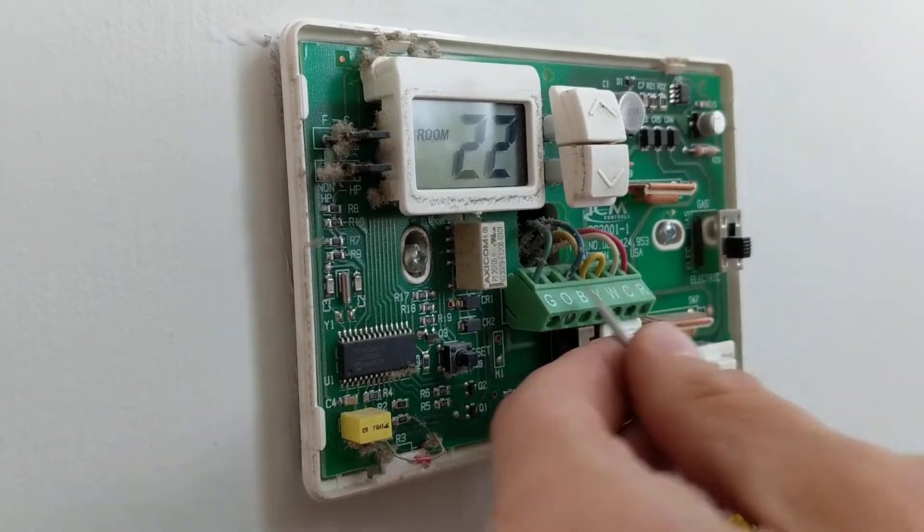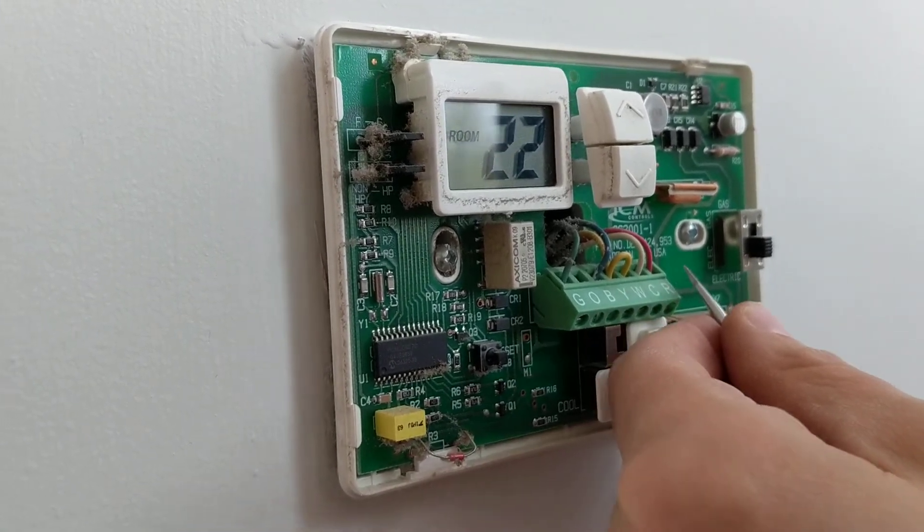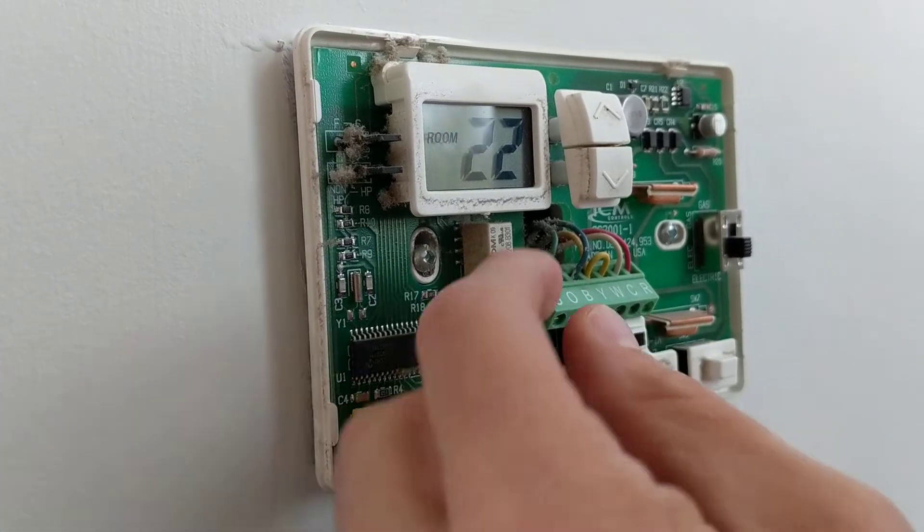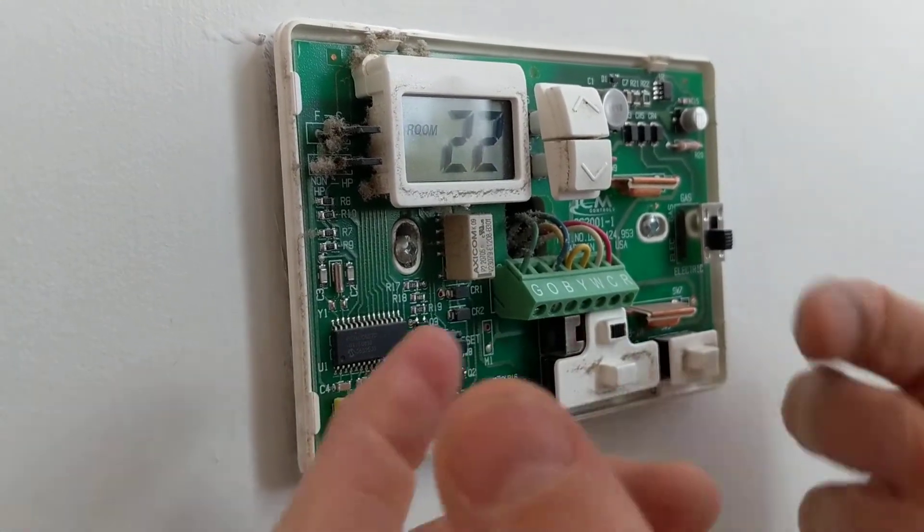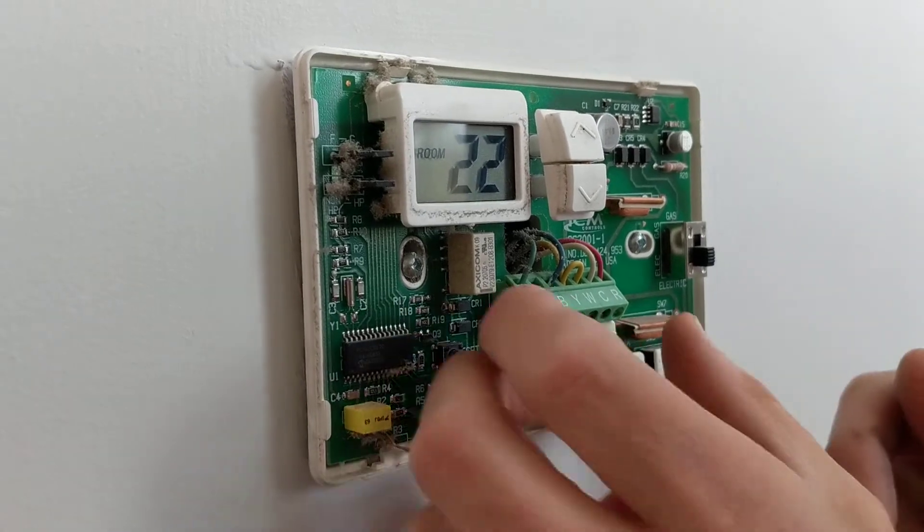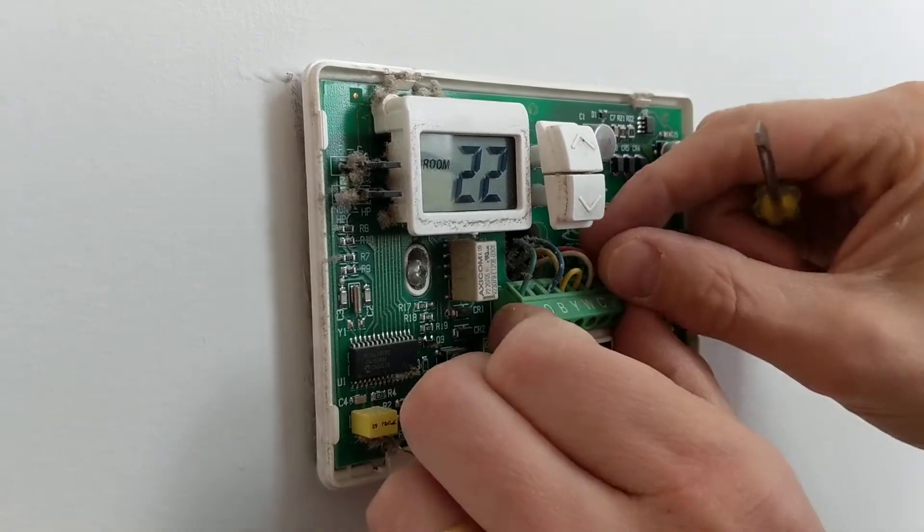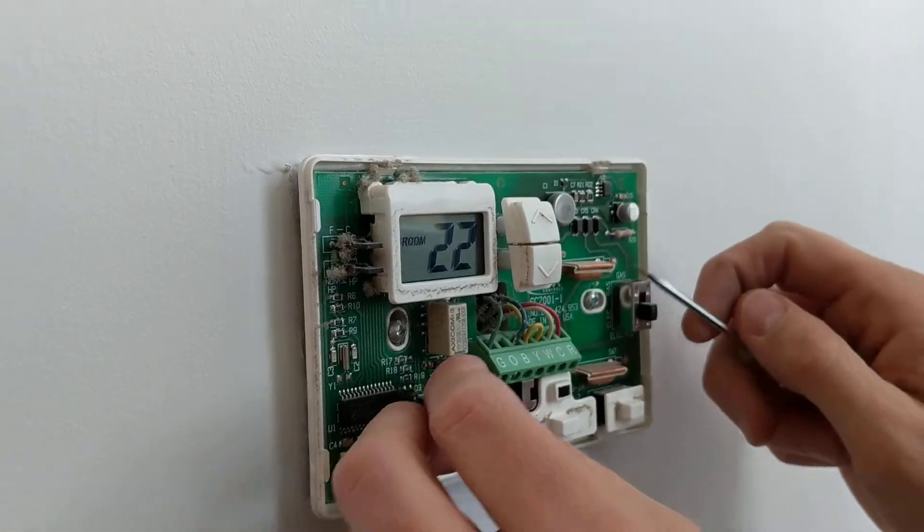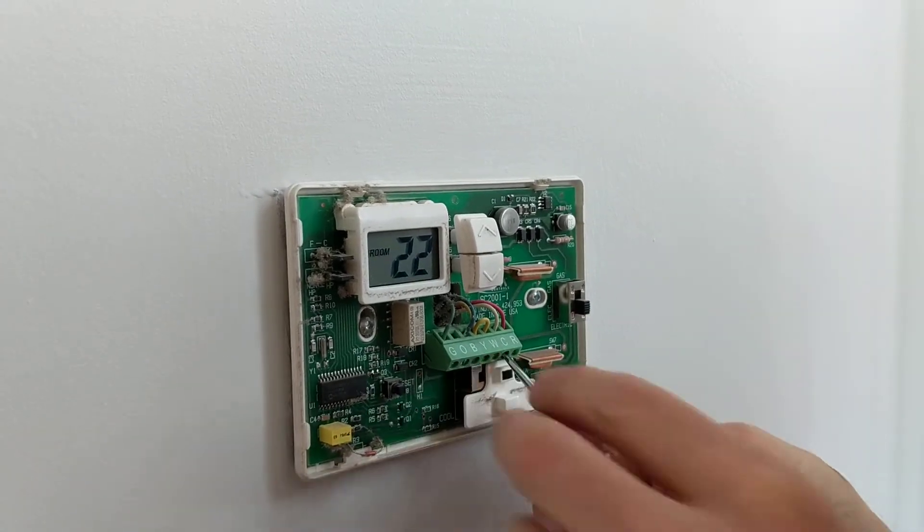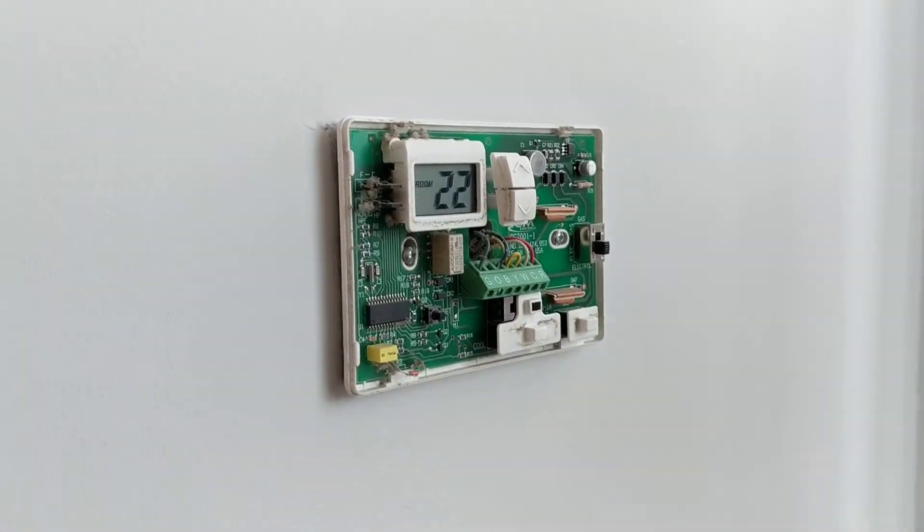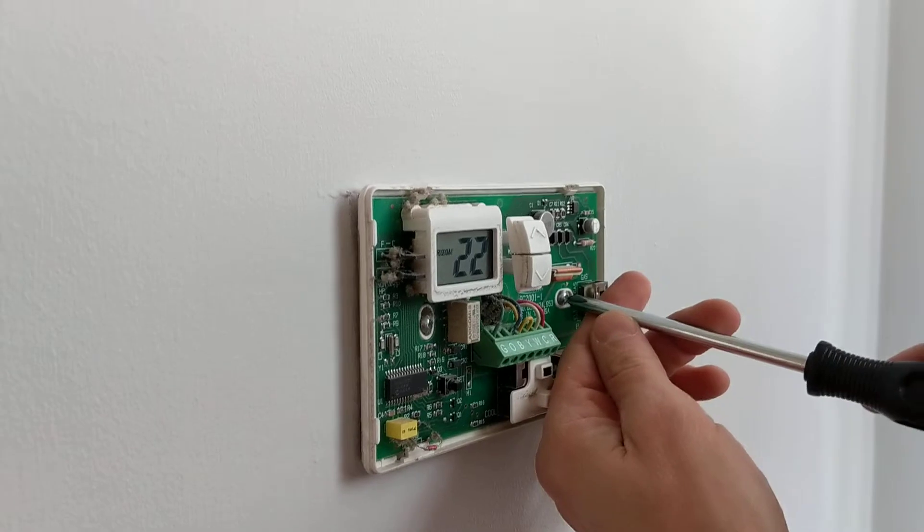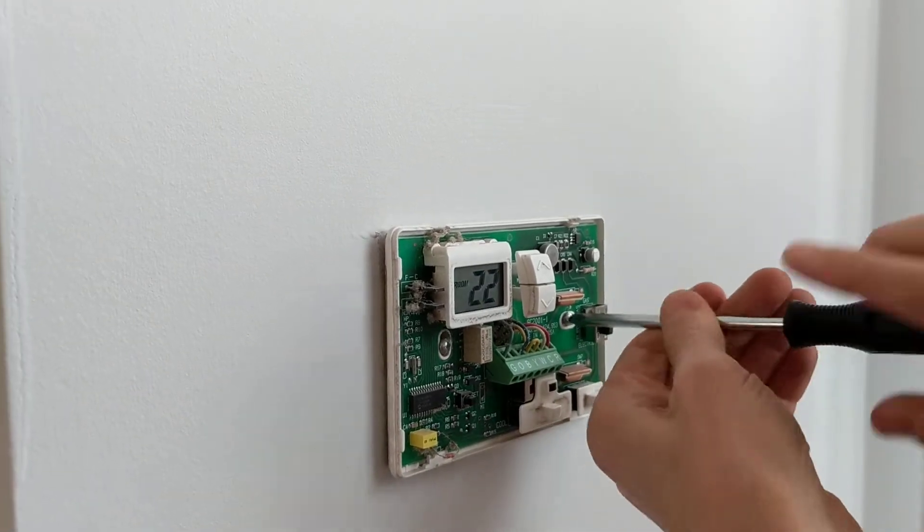Now if yours doesn't look anything like this you can still map the same colors like if you had a certain color going to a certain position just put them in the same positions on the new one. But so far these all look like this. So this is pretty loose. So we're just going to take off the plate.